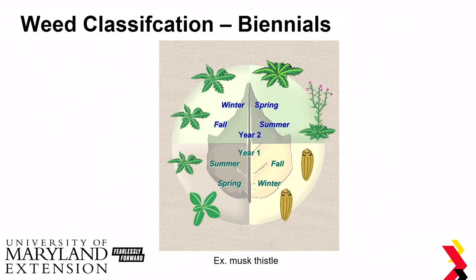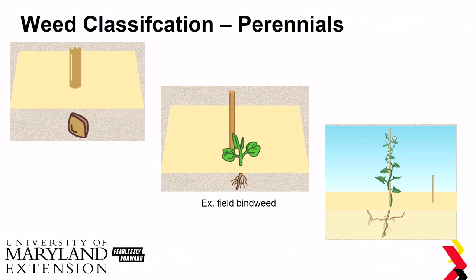Biennial weeds have basically two life cycles. The first year, they seed in fall and winter and have a rosette period in spring and summer. Then the following year, they start to bolt — that upward vegetative growth — and once biennial weeds start bolting, you're really past the period of good control. Perennial weeds grow from seed and initially look similar to annual weeds, but then produce underground rhizomes or stolon structures. A contact herbicide is not going to be effective against these perennial weeds.